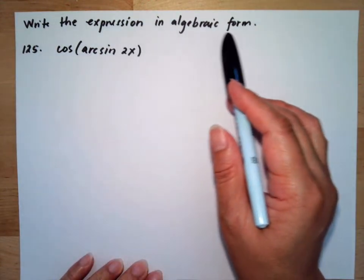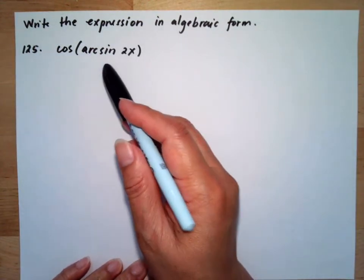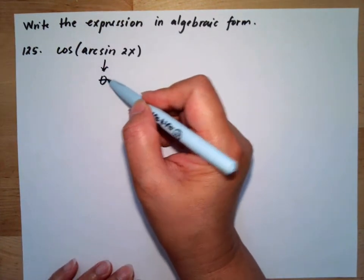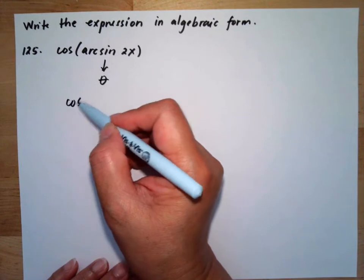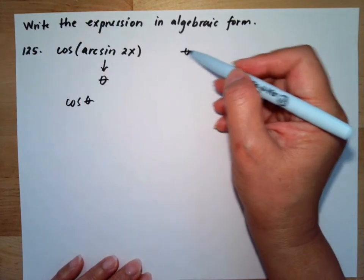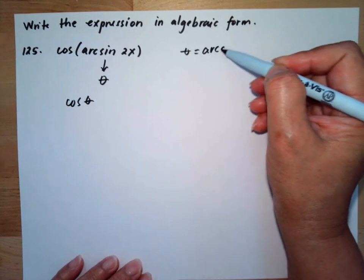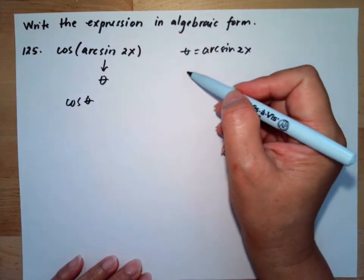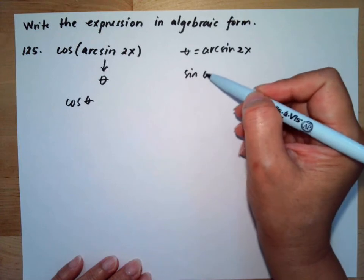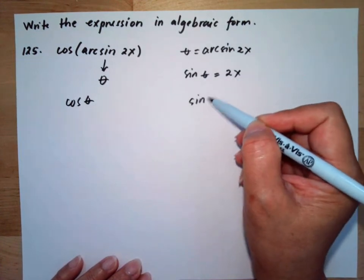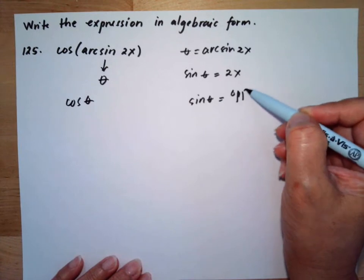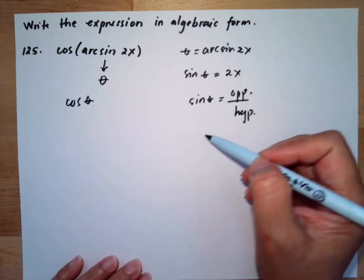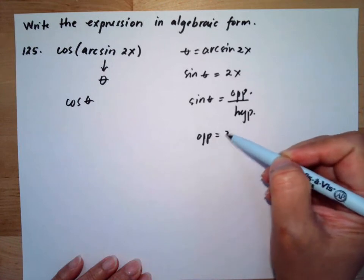Write the expression in algebraic form: cosine of arcsine 2x. If this is equal to our angle theta, meaning we're looking for cosine theta, so theta is equal to arcsine 2x. Then sine theta is equal to 2x, and we know sine theta is opposite over hypotenuse, so our opposite is equal to 2x.